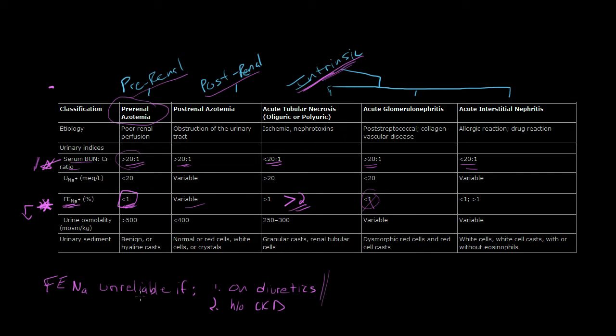If you can't use your FINA to calculate it because someone's on diuretics, you can instead attempt to calculate your FE urea, your free extraction of urea, because that's not affected by diuretics the way sodium is, and it can be a helpful substitute at times.